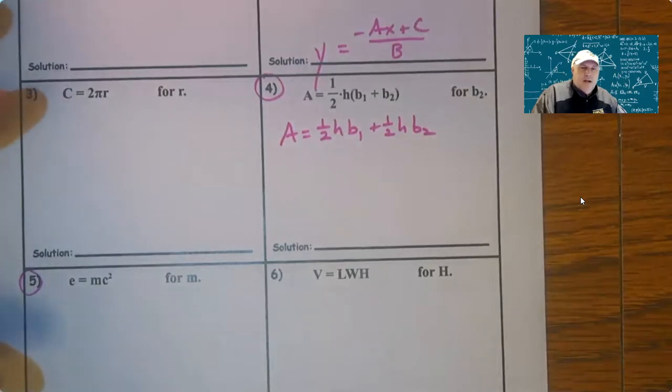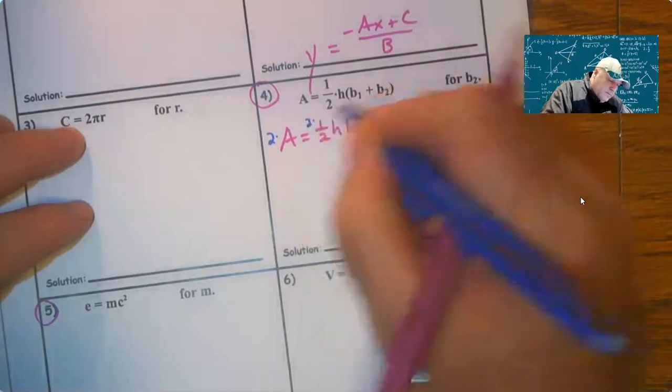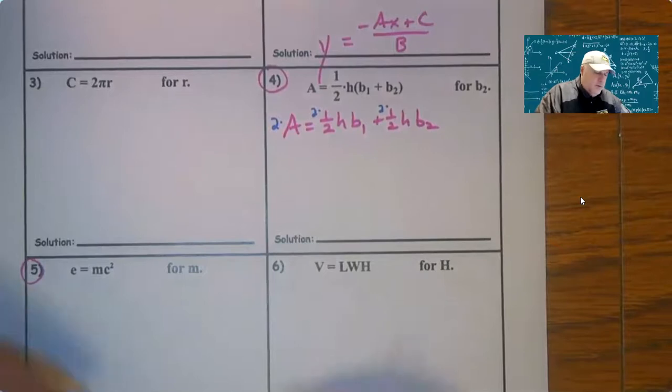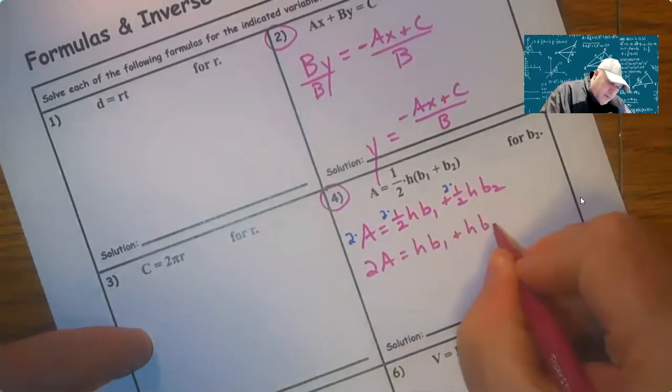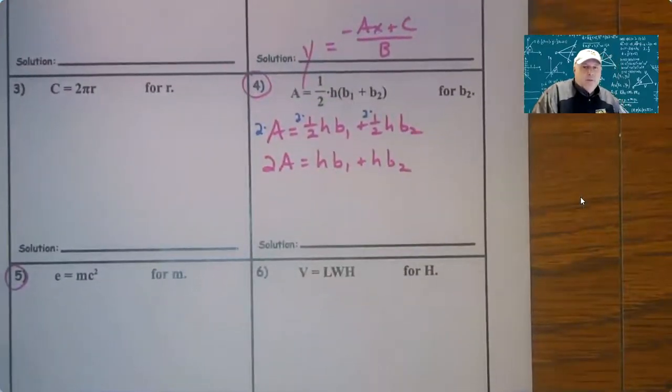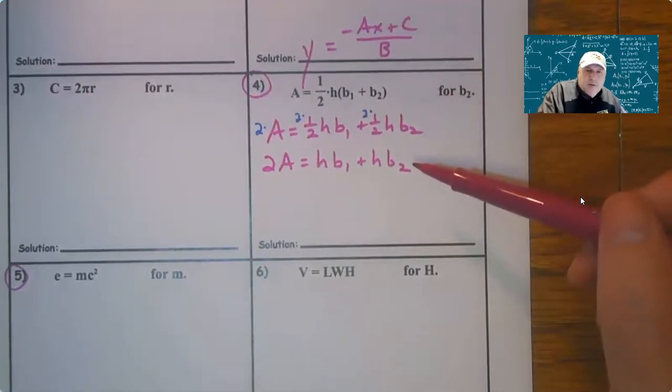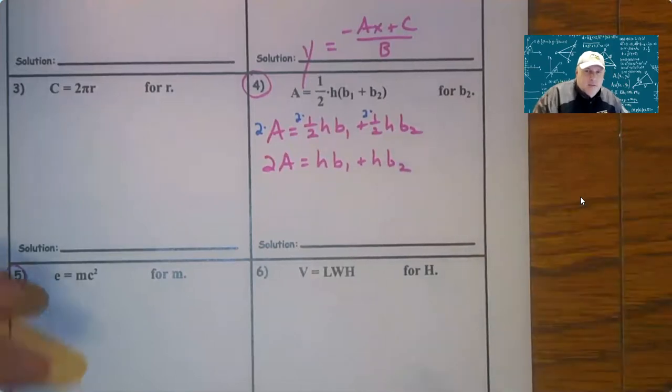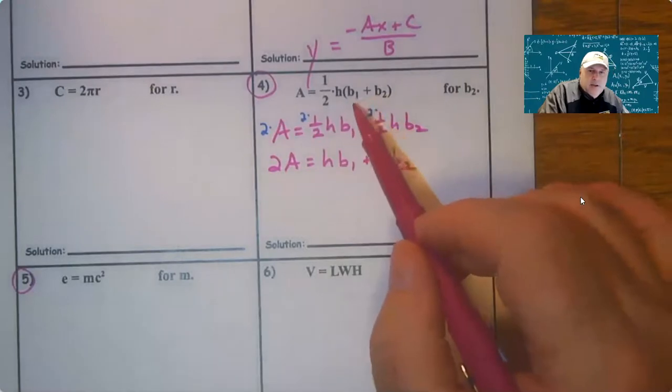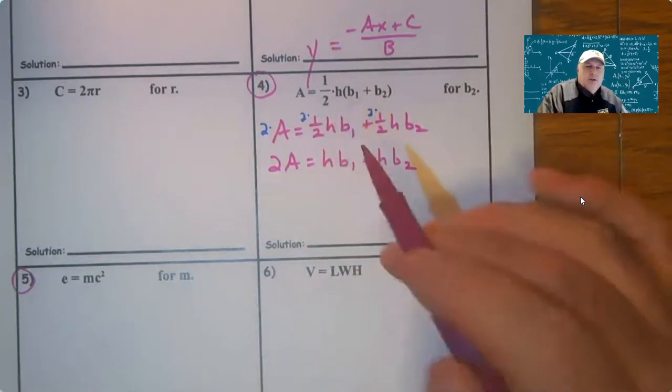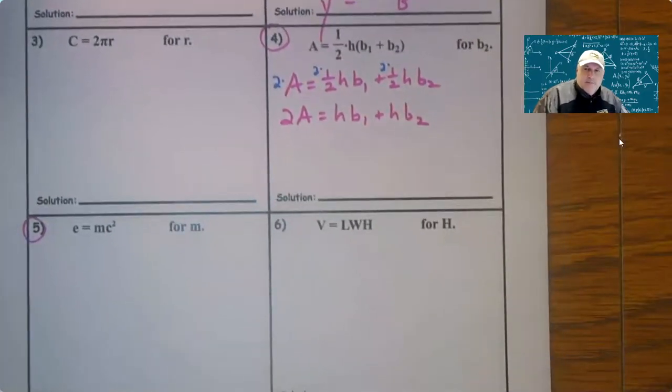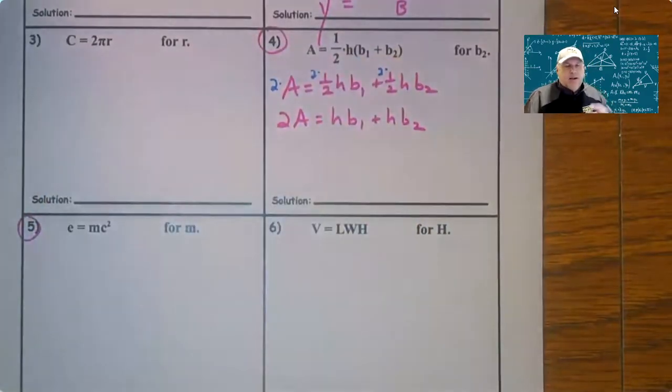Multiply to eliminate parentheses is your first step here, so one half h b1 plus one half h b2. Step two: eliminate denominators. You need to multiply left to right by two, everything gets the two. So 2A equals h b1 plus h b2. Now one little note here: if we were solving for H we just replicated it, right? Then what you would have to do is you would have to go back to the previous step and divide both sides by b1 plus b2.